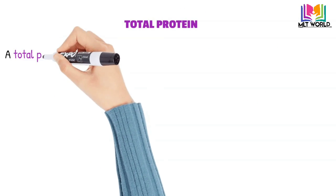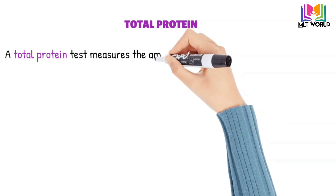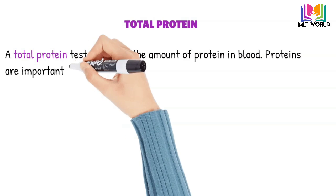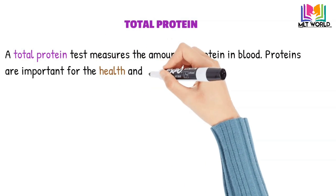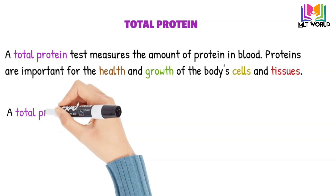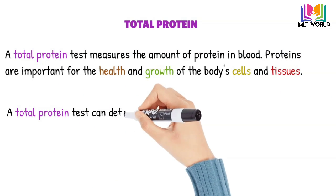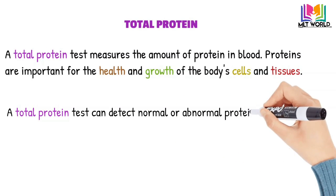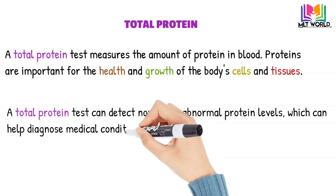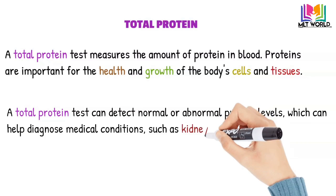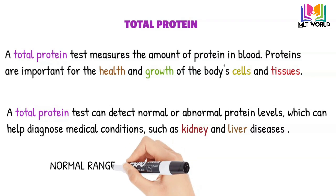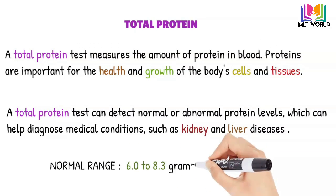Next is total protein. Total protein is a test that measures the amount of protein in the blood. Proteins are synthesized by the liver and are important for the health and growth of body cells and tissues. The total protein test can detect abnormal protein levels, helping to diagnose medical conditions such as kidney and liver diseases. In liver disease, total protein levels will decrease. Normal range is 6.0 to 8.3 g/dL.